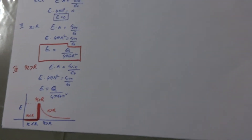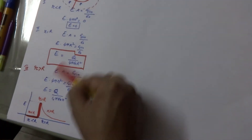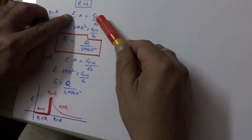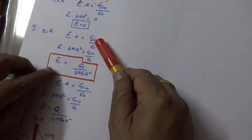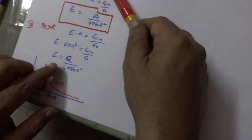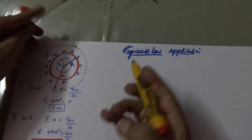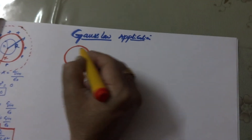In the case of a solid sphere, the remaining two cases — on the surface and outside — are the same. Because E·A equals Q and 4πR², giving E equal to Q by 4πε₀R². And even outside, the same result will come. Only the inside case is different for the solid sphere.